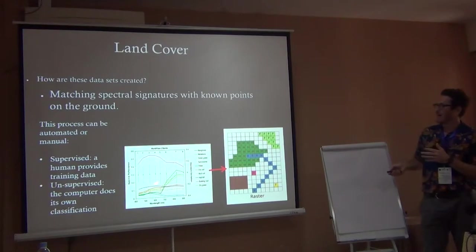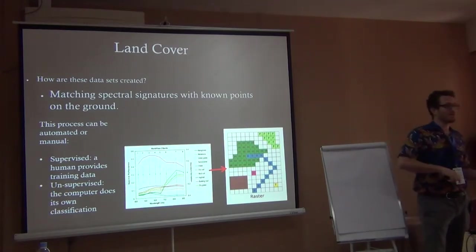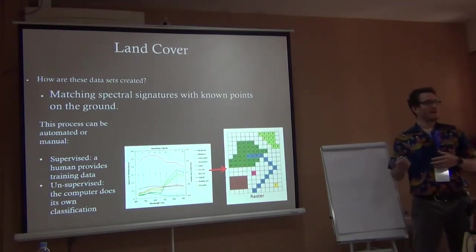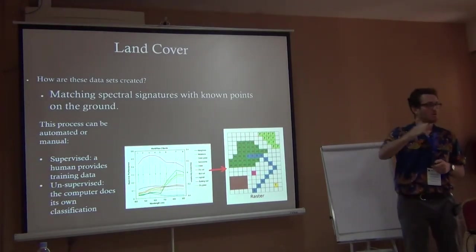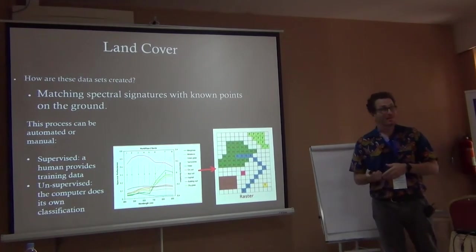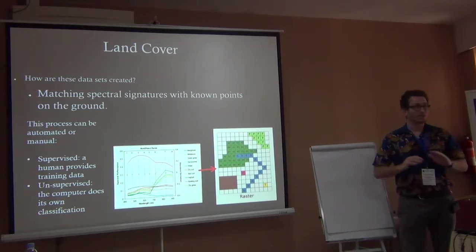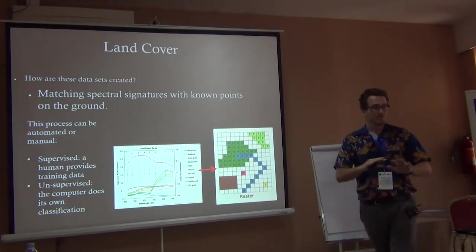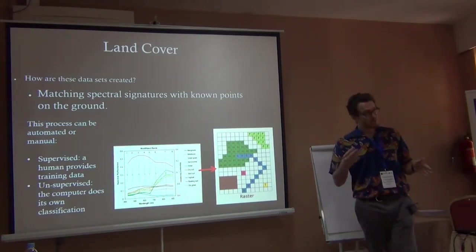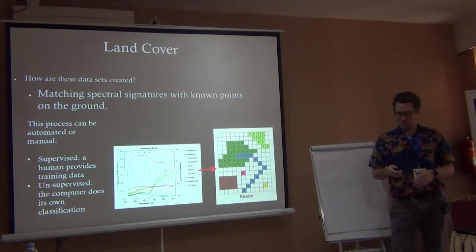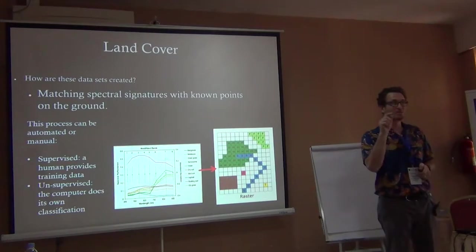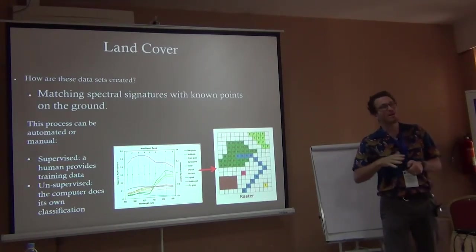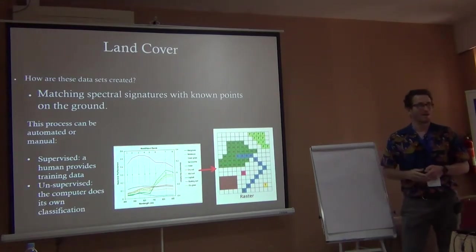The way they usually classify land cover can be either supervised or unsupervised. In unsupervised classification, humans don't help the computer — they trust it to do the classification on its own. But a lot of times we need supervised classifications, where a human being checks what's being classified and trains the computer to recognize what land cover is which.